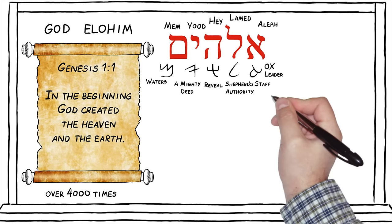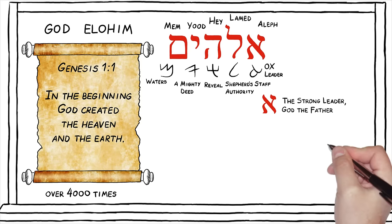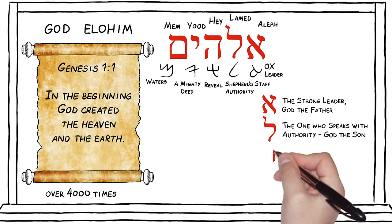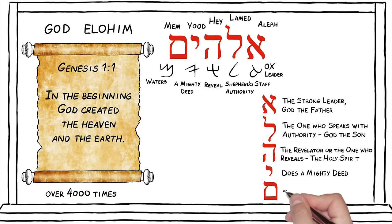Aleph — the strong leader. Who is he? God the Father. Lamed — the one who speaks with authority. And who is he? God the Son. He — the revelator, the one who reveals: the Holy Spirit. Yod — does a mighty work with his hand that separates. Mem — the waters from the waters.